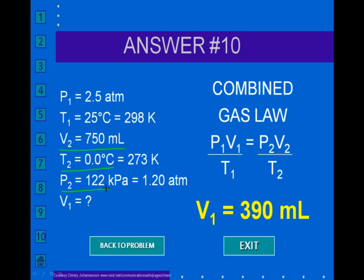The final pressure was 122 kilopascals. We need to convert this into atmospheres. Everything has to be in units of atmospheres. So how do you convert kilopascals to atmospheres? You divide by 101.3. That is, take 122 kilopascals and divide it by 101.3. That converts it into atmospheres.